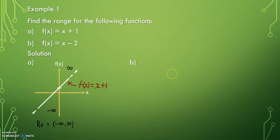Next, we look at question b. Here is the graph and this graph refers to f(x) = x - 2.